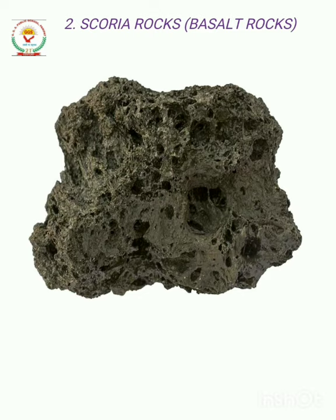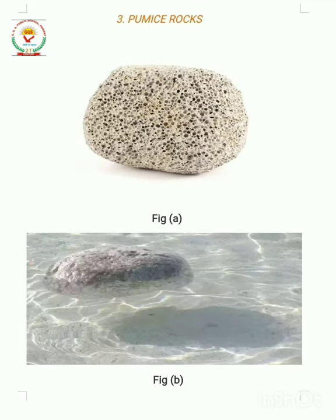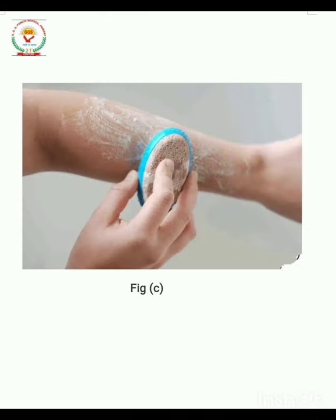The third type of igneous rock is pumice rock. Pumice rocks are formed when lava cools quickly above the ground. As you can see in figure A, these rocks have many small holes in them and give a spongy-like appearance. As you can see in figure B, they are so light that they can easily float on water. Pumice rocks are used as body scrubbers, to polish floors, and they are also used in soaps and tooth powders.